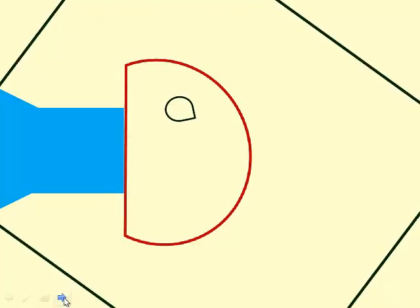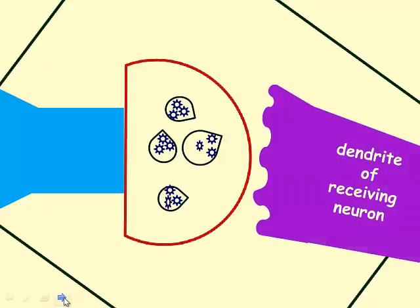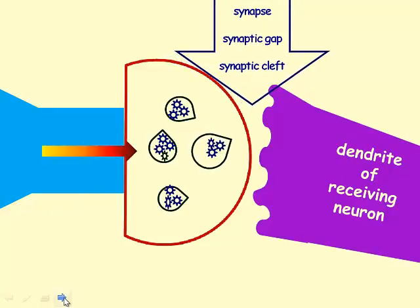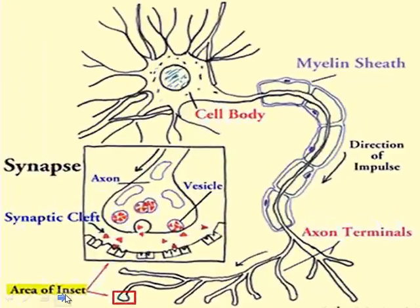Here you see the sending neuron has fired. The action potential has crossed the soma and the axon facilitated by the myelin sheath and nodes of Ranvier and causes the vesicles to release their neurotransmitters into the synapse. The neurotransmitters cross the synapse and bind into the receptor sites of the receiving neuron. This causes the receiving neuron to fire. Here's a few pictures, again showing a close-up of the synapse. And here you see that the neurotransmitters have shapes.